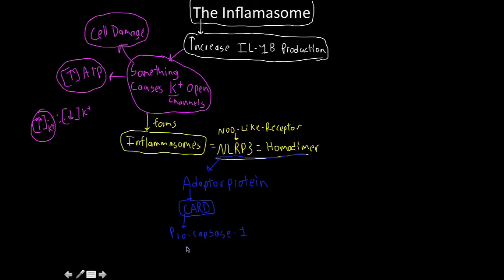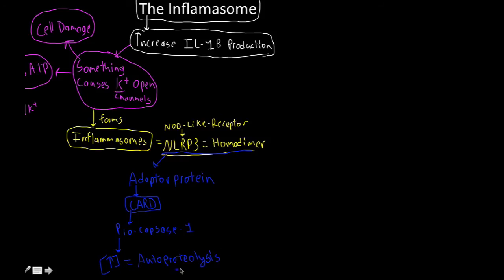This CARD domain is going to start binding procaspase-1. If we have a large, extremely high concentration of procaspase-1 near each other, they're going to start bumping into each other, undergoing conformational changes, which results in them starting to cleave themselves. We call this autoproteolysis - auto meaning self, proteo meaning protein, lysis meaning cleavage. After autoproteolysis, we have the active form of caspase: active caspase-1.